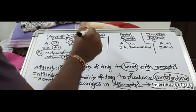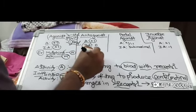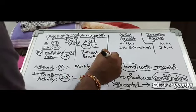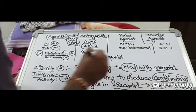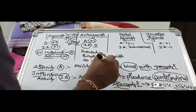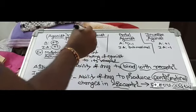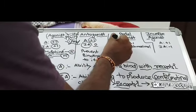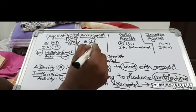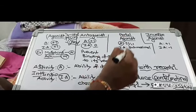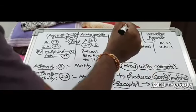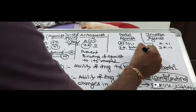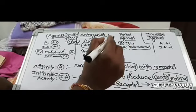An antagonist prevents the binding of an agonist to its receptor. Now, for partial agonists, affinity is plus one — meaning they have moderate affinity towards the activated receptor — and they have submaximal intrinsic activity.